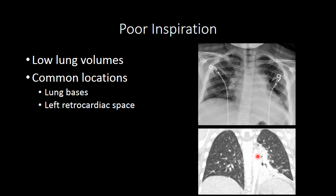Seeing atelectasis in the retrocardiac space and in the right lung base are very common locations. You can also notice that in this person, their overall lung volume is low — they don't have as many rib spaces apparent in the chest radiograph as you would see in a normal person who has fully inspired.